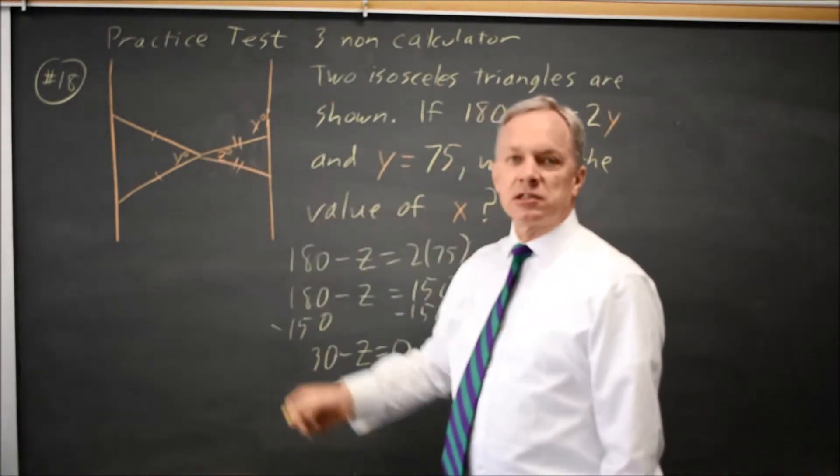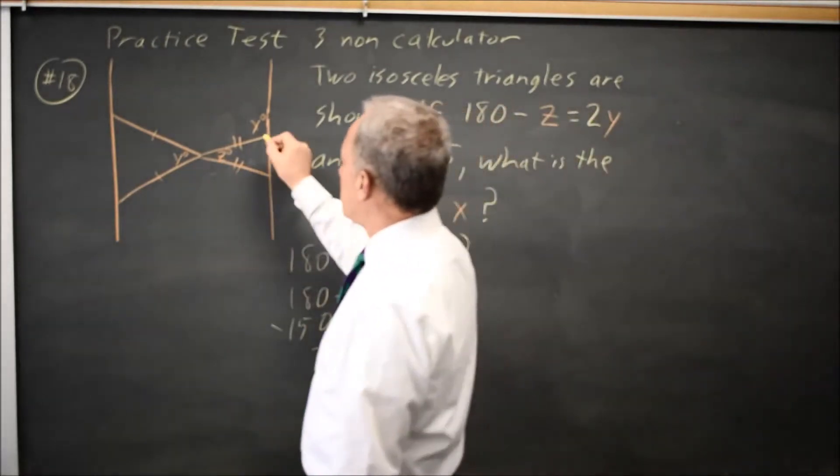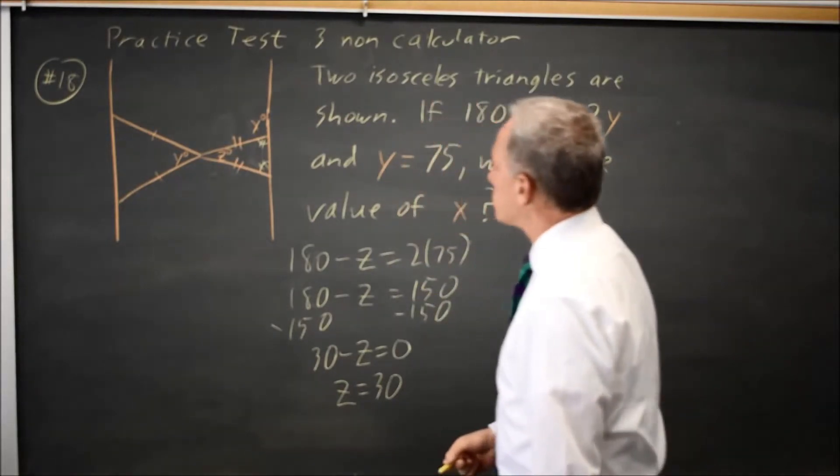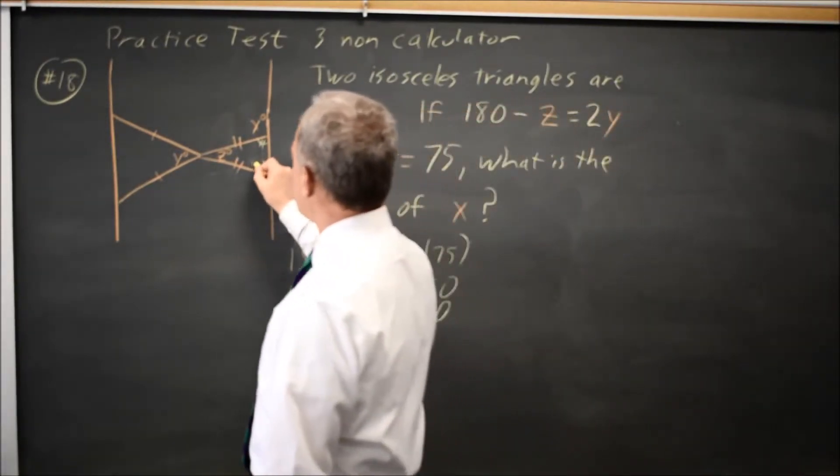Then in this triangle, since two sides are equal, the opposite angles are also equal. Since z equals 30, let's call this angle w.